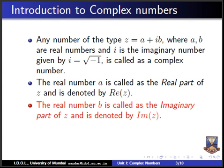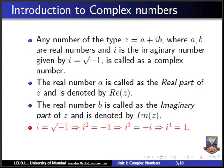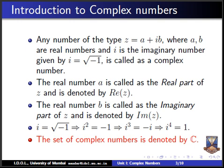When solving problems, we require the values of i. Since i equals square root of minus 1, squaring both sides gives i² = −1. Multiplying by i gives i³ = −i. Doing this once more gives i⁴ = −i² = −(−1) = +1. We should know all four values of i, as they help solve problems. The set of all complex numbers is denoted by the script alphabet C.